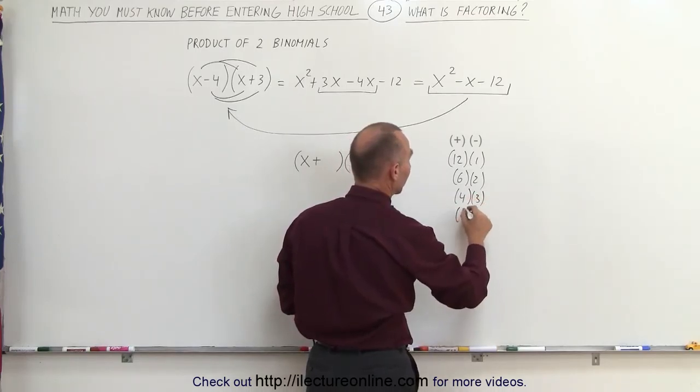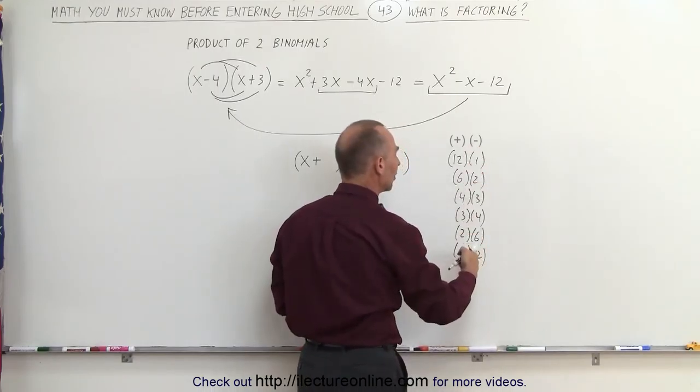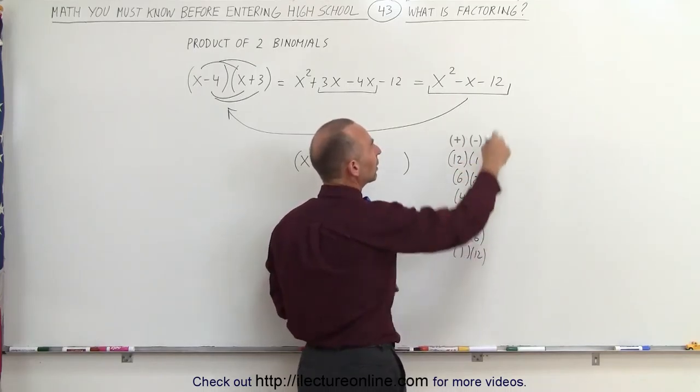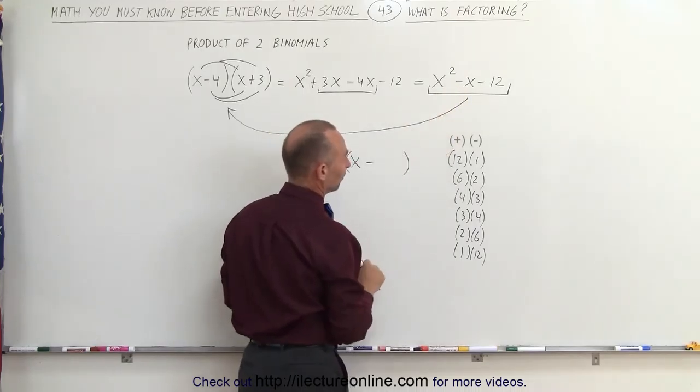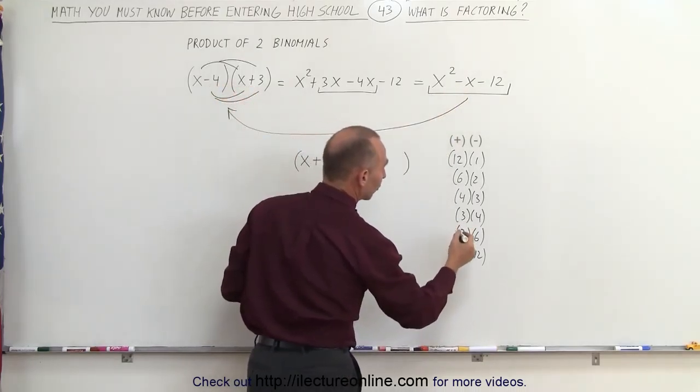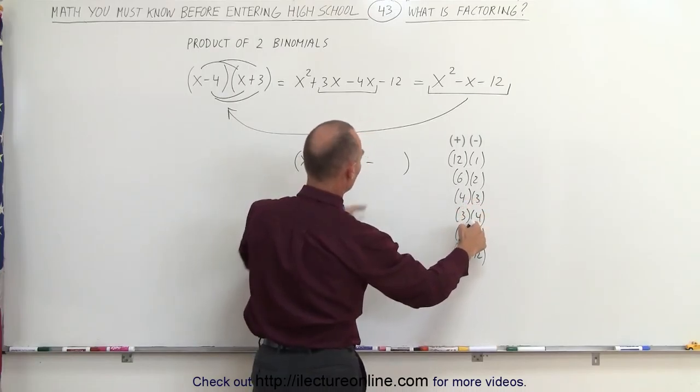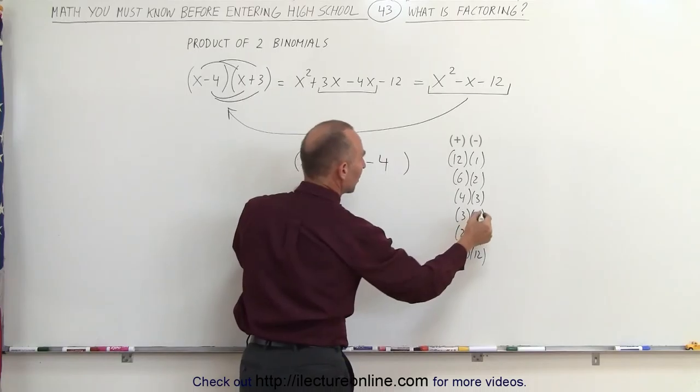Alright so the answer is it could be 12 times 1, it could be 6 times 2, or it could be 4 times 3. Of course it could be reversed, it could be 3 times 4 or 2 times 6 or 1 times 12. So one of these combinations is the right answer. All of them will give me a 12 but depending upon where I put it I get the correct middle term.